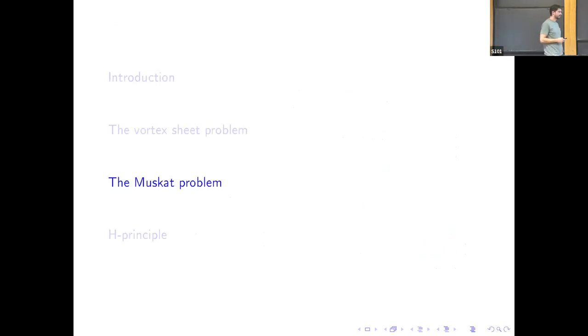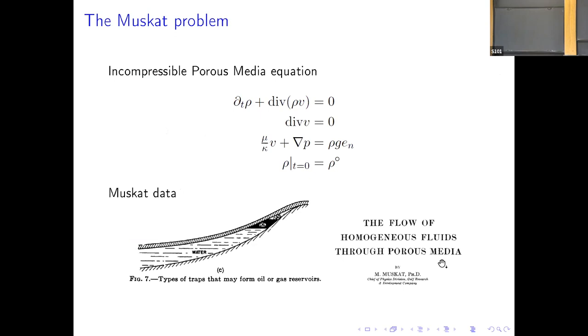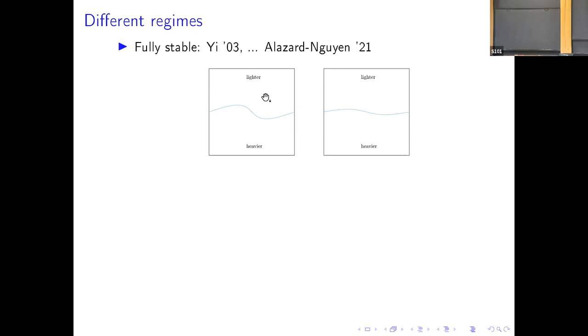Now, we come back to the Saffman-Taylor instability. In this case, we consider the incompressible porous media equation. We have the conservation of mass, the incompressibility. And the third row is Darcy's law, which is an asymptotic version of the conservation of momentum in the porous media. In this work, Maurice Muscat became interested in the case of multiphase flow inside the porous media with applications to petroleum engineering. And this is why this kind of data are called Muscat data.